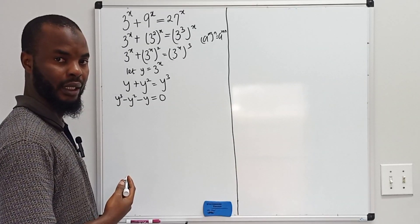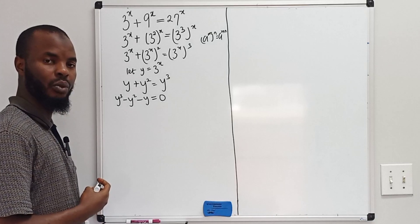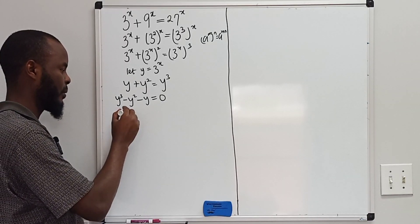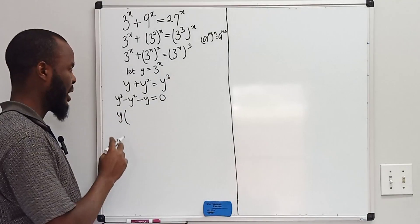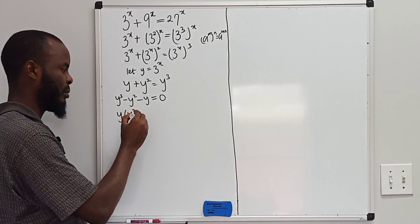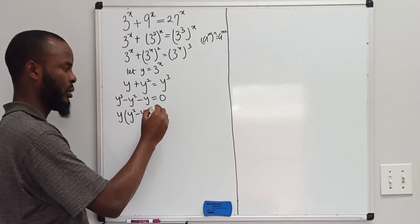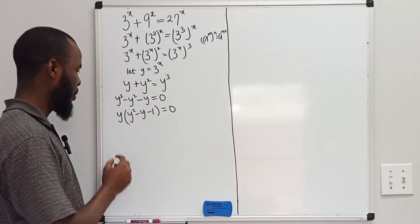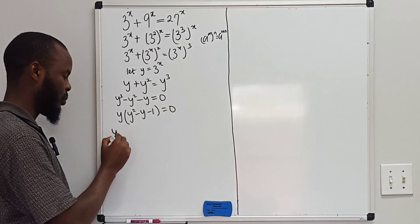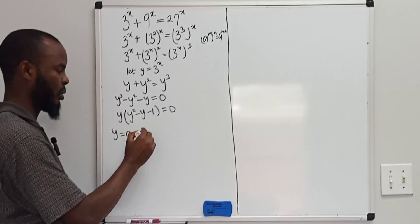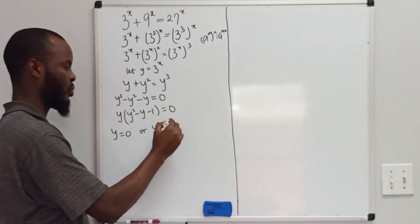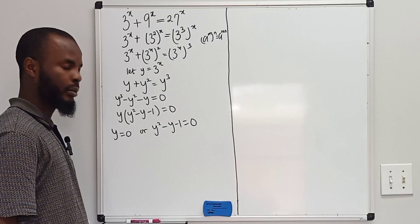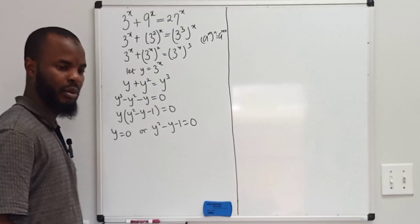Now we will form an equation like this. Forming this equation, we need to factorize y out. So factorizing y out, we have y times the quantity y squared minus y minus 1 equals 0. With this, we can say that y equals 0 or y squared minus y minus 1 equals 0.